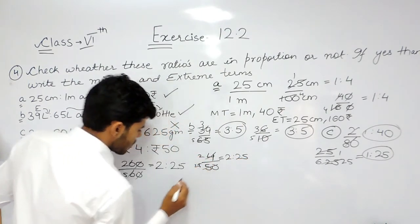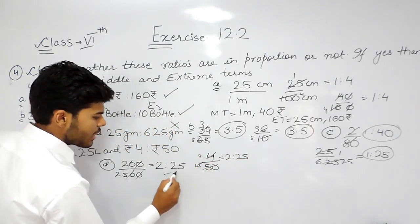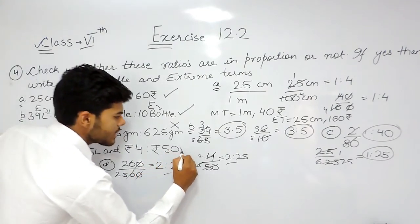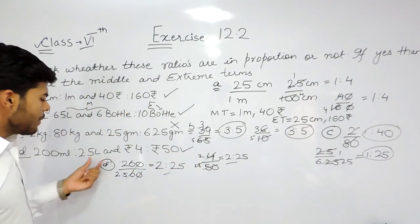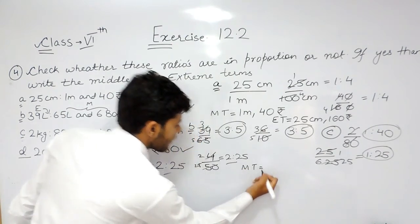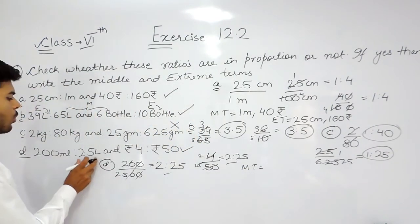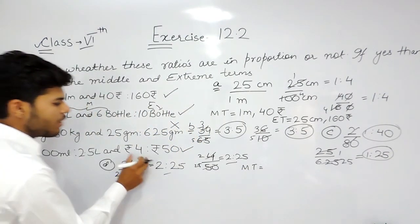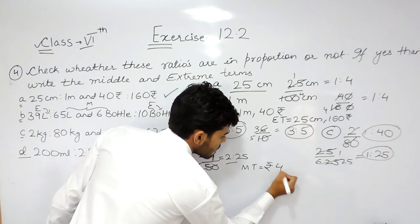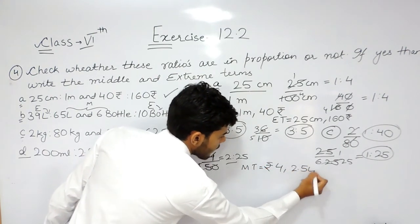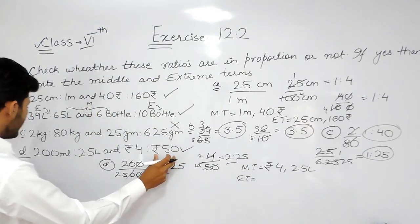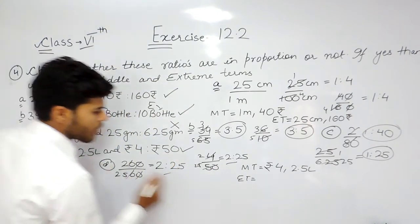So these two ratios are equal to each other, meaning the last statement is in proportion. The middle terms are 2.5 liters and 4 rupees, and the extreme terms are 200 milliliters and 50 rupees.